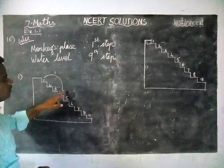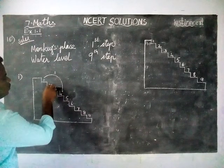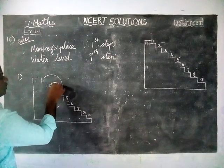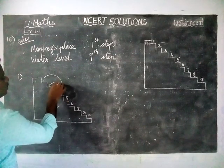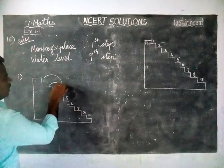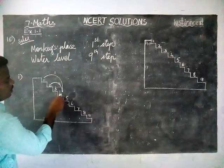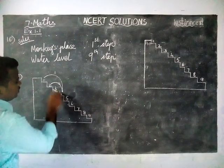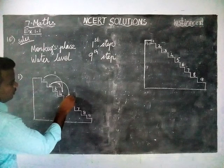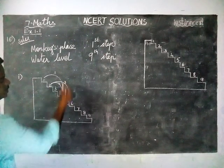Then two steps up again — one, two. This is the second jump. Next, again three steps down — one, two, three. This is the third jump.